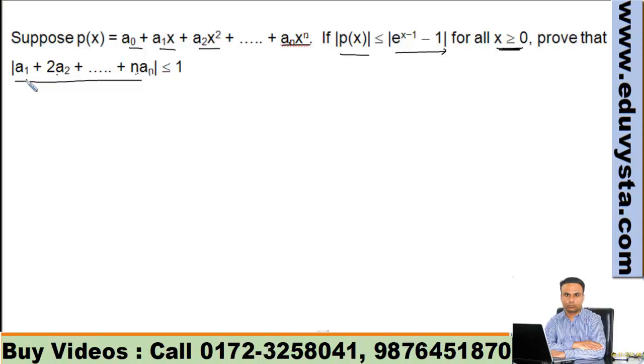So if you look at it, what is this? This is derivative at which point? 1. Panel derivative - if you differentiate this and put x is equal to 1, you get this expression. That means what we have to prove now: |p'(1)| is less than or equal to 1. This is called data interpretation - what is given, you interpret it.